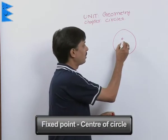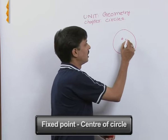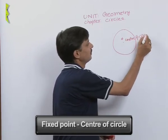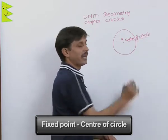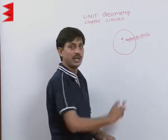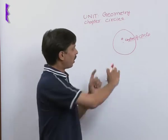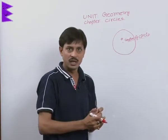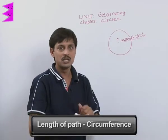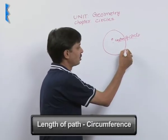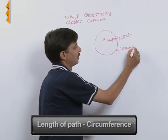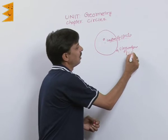The fixed point is known as the center of the circle, generally denoted by O. The length of the path — that is, the boundary of the circle — is known as the circumference of the circle.